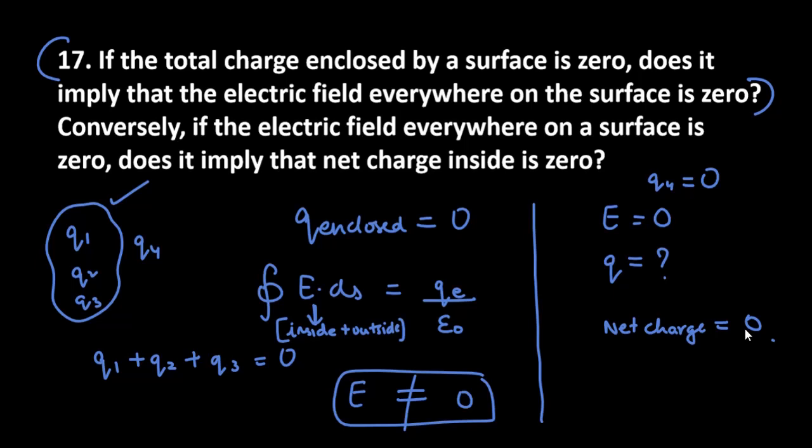So yes, this is how you have to attempt your question. You have to give both answers. Take a Gaussian surface, show that these charges are present, show one or two charges outside also, and then you can justify your answer. So yes, this is how you can answer question number 17. Let's now start with question number 18.